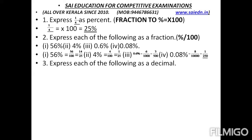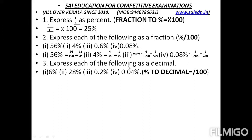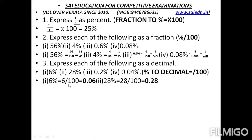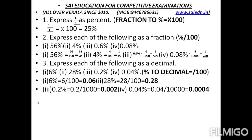Question number 3: express each of the following as a decimal. For 6%, divide by 100: 6 by 100 gives 0.06. For 28%, 28 divided by 100 gives 0.28. For 0.2%, divide by 1000 because of the decimal, giving 0.002. For 0.04%, there are two decimal places, so divide by 10,000, giving 0.0004.